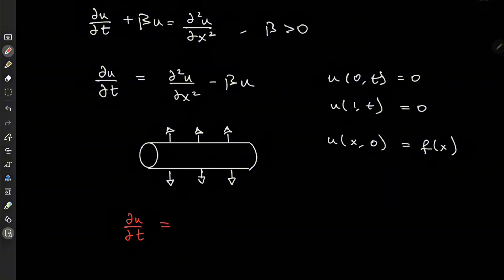Ah, much better. So partial u over partial t would equal negative beta times u, but this is of course just an exponential function.